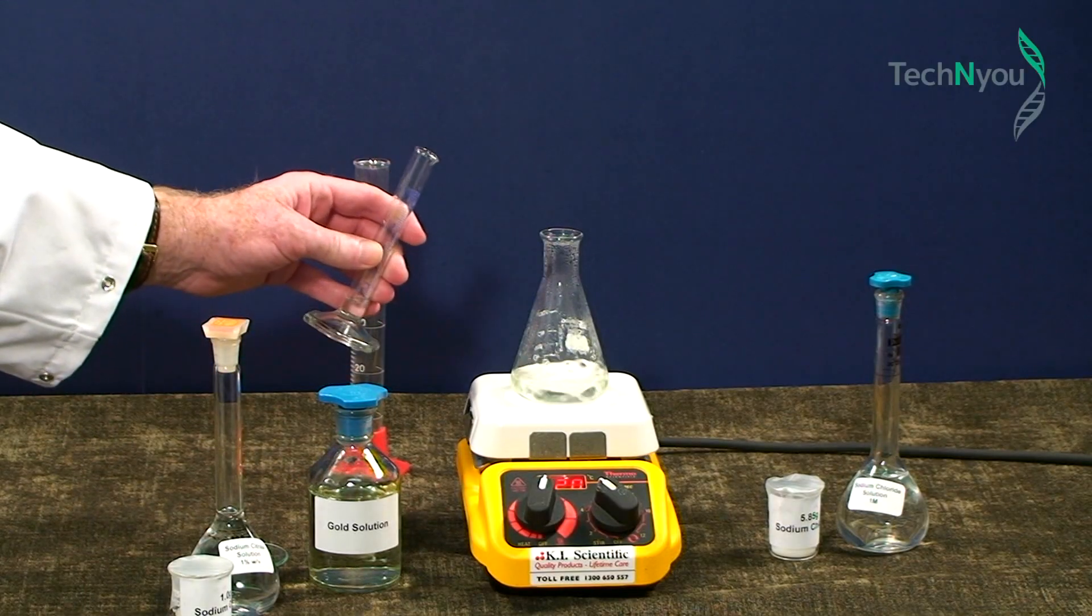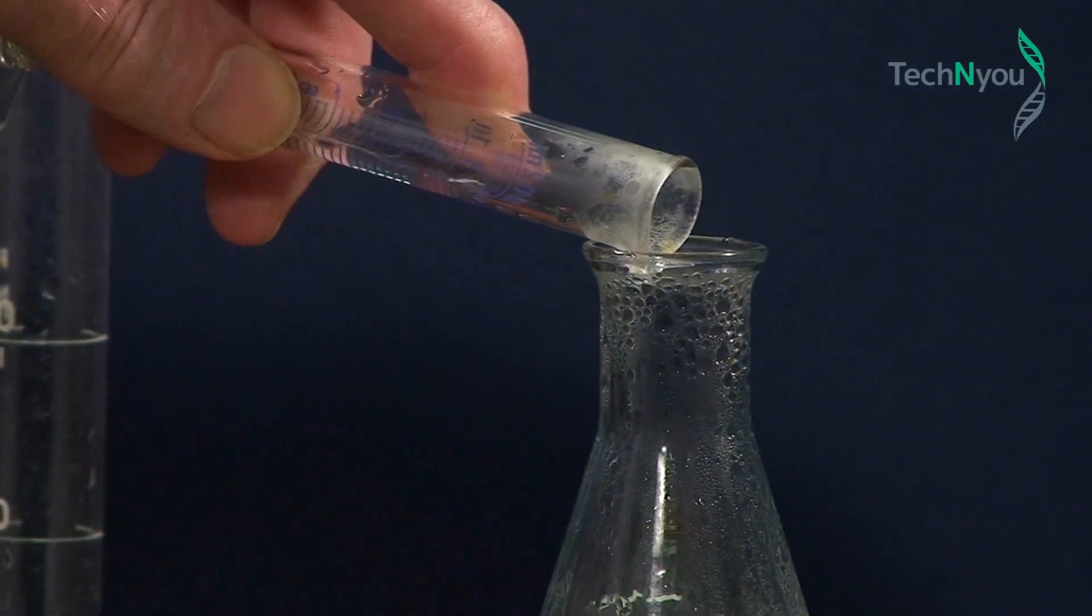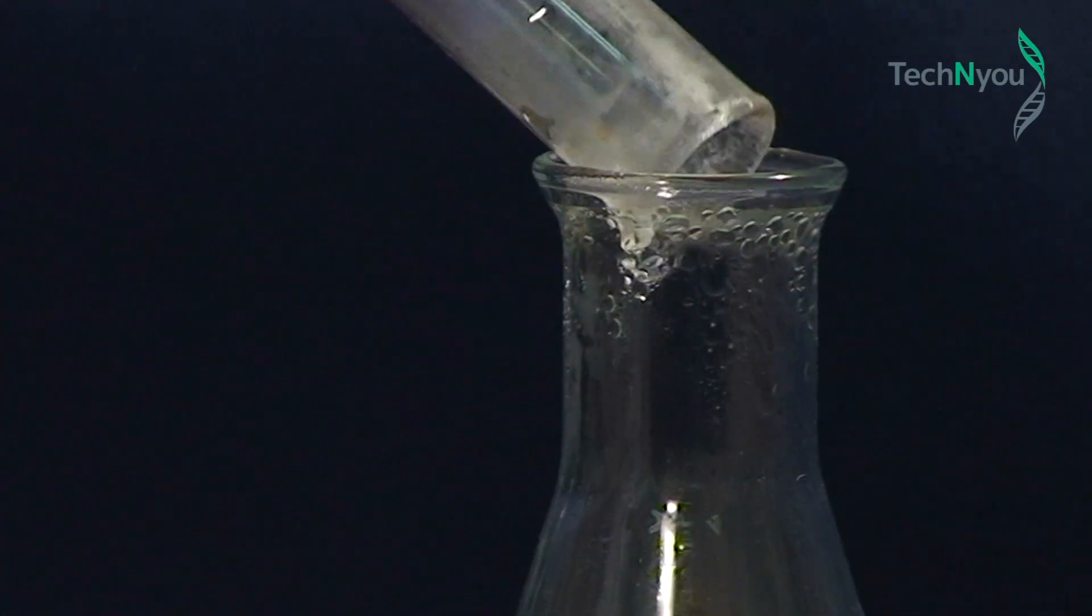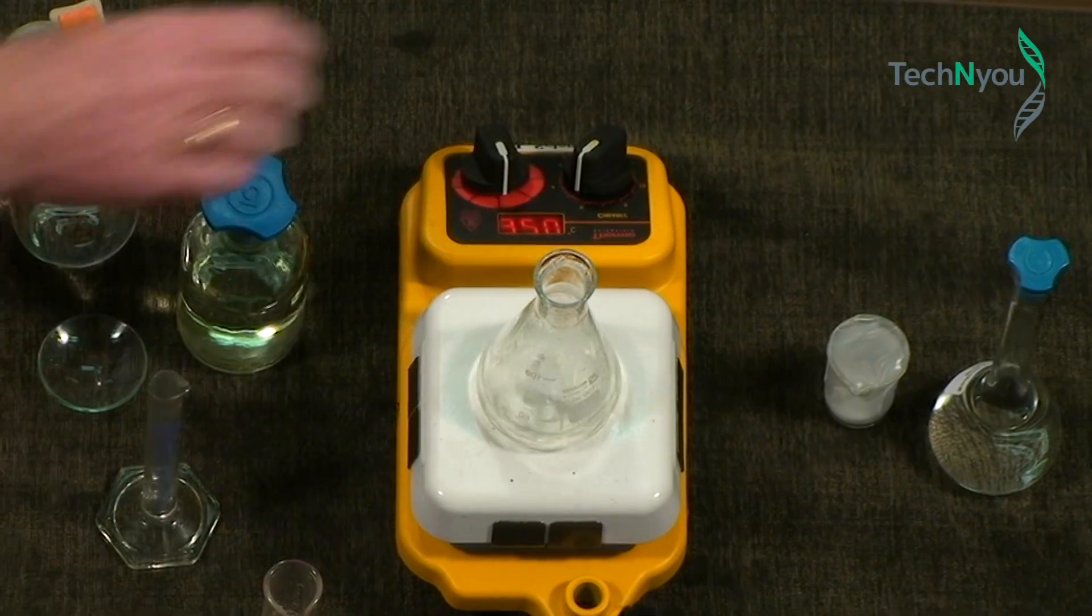Leave the stirrer on and add 2 ml of sodium citrate, which facilitates a chemical reaction and produces uniformly sized particles. Now we turn off the heat.